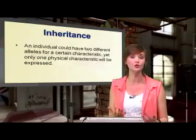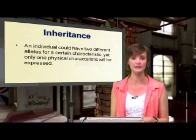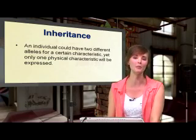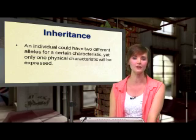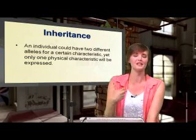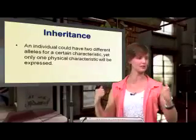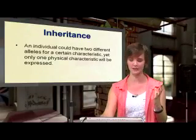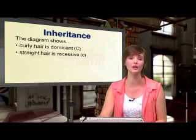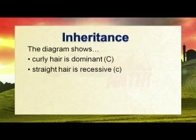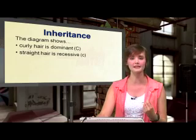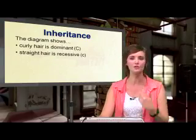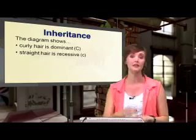An individual could have two different alleles — capital C and lowercase c — but we will always see the dominant phenotype. The dominant phenotype will always emerge. The dominant genotype will always come out in the phenotype; it kicks the recessive to the side, and because it's stronger, that is what you look like. So remember, in this example, curly hair is dominant and straight hair is recessive. Depending on the example you are doing, it may change, but if they don't specify, the big letter is dominant and the small letter is recessive.